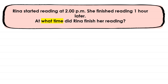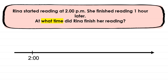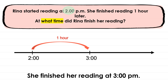Second example — Rena started reading at 2 PM and she finished her reading one hour later. At what time did Rena finish her reading? She starts at 2 PM, and one hour later means we add one hour — so it becomes 3 PM. Rena finished her reading at 3 PM.